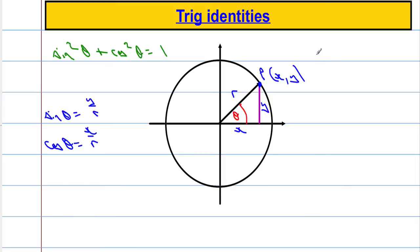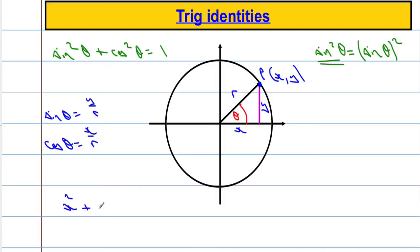Just so you know, sine squared of theta — or cosine squared of theta — is the conventional way of writing sine of theta squared. So this is the more conventional way that we write sine theta all squared. We're also going to use some coordinate geometry of the circle, and we know that coordinate geometry of the circle says that x squared plus y squared equals r squared. So we're going to use that fact.